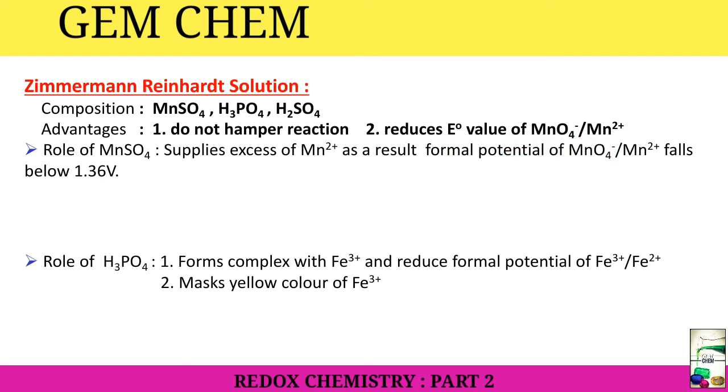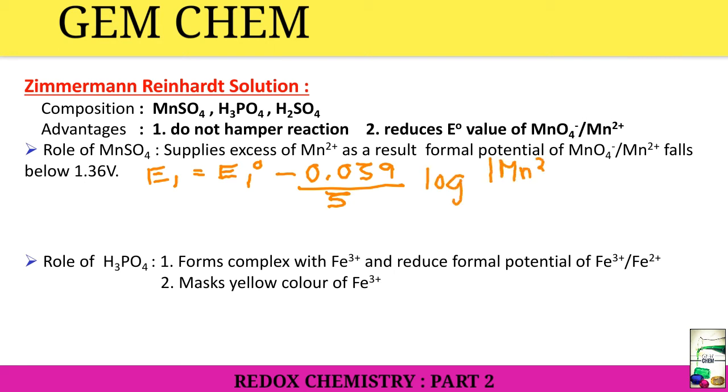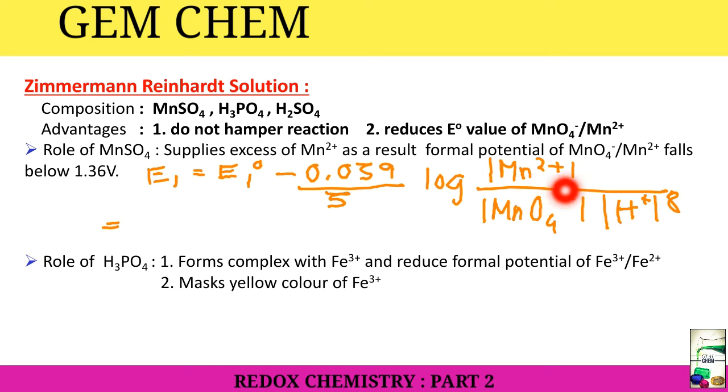It is composed of MnSO4, H3PO4, H2SO4. Advantage of this is it does not hamper the reaction and reduces E⁰ value of MnO4⁻/Mn²⁺. The role of MnSO4 is that it supplies Mn²⁺ in excess. As a result, formal potential of MnO4⁻/Mn²⁺ falls below 1.36. What happens is E₁ = E₁⁰ - 0.059 by 5, that is 5 electron transfer, log [Mn²⁺]/[MnO4⁻][H⁺]⁸.